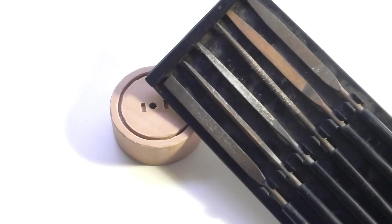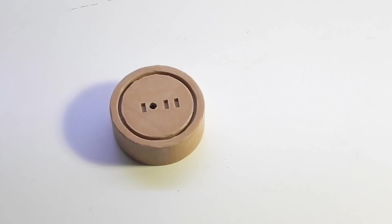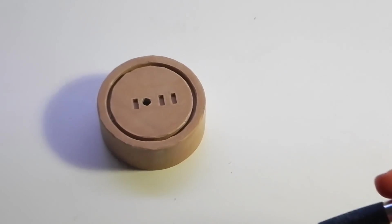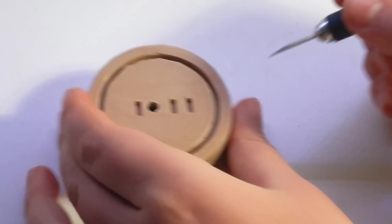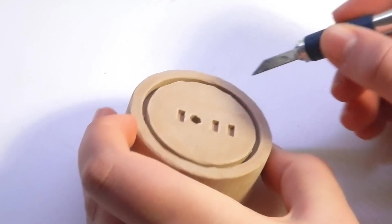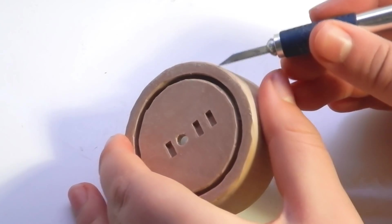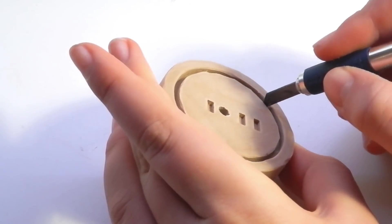Oh, and all the models will be on Thingiverse, link in the description. I also sanded the outside with some sandpaper to get rid of the layer lines and used a file to sand the holes. Now everything fits perfectly in the box. Then, just for style, I went around the edges with a precision knife just to get that more hand-crafted wooden look.